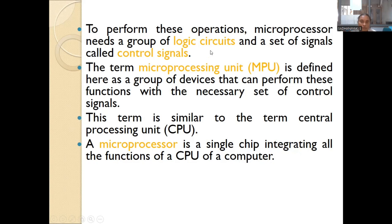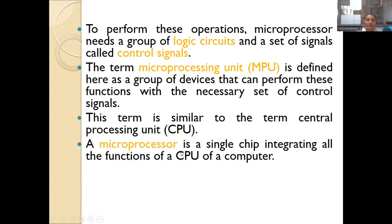For performing a process, a microprocessor needs logical circuits and control signals — this is the microprocessing unit (MPU). The CPU and MPU are more or less similar. However, the microprocessor is a single chip integrating all the functions of a CPU of a computer. So while the CPU functions may be similar, in a microprocessor everything is integrated into a single chip.